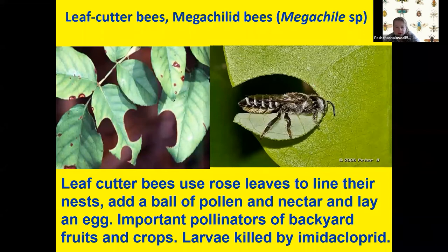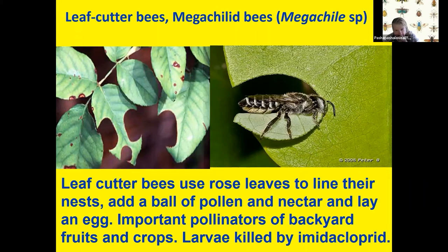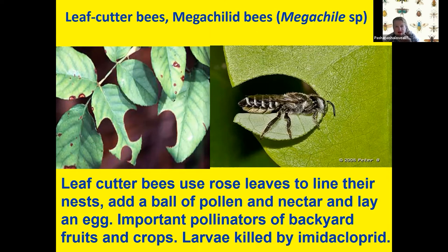Imidacloprid or emamectin benzoate are good for ash trees to protect against emerald ash borer, but they're not good if you use them on plants that stem-nesting bees use. Here's a leafcutter bee making those C-shaped holes. They put pollen inside a stem, lay an egg in the pollen ball. If they get that pollen from a plant treated with a systemic insecticide, published papers confirm that pollen ball will kill the larvae. Also, if they take a leaf that imidacloprid has been used on, that leaf will kill the larvae as it grows.